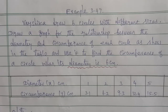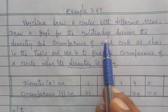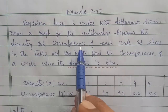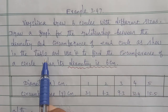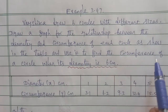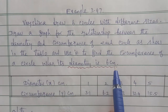Hi students, I am Gopinath. 10th Maths, Example 3.47. Versica drew 6 circles with different sizes. Draw a graph for the relationship between the diameter and circumference for each circle as shown in the table, and use it to find the circumference of the circle when the diameter is 6 cm.